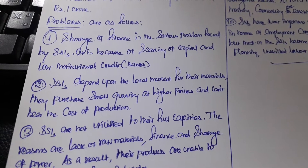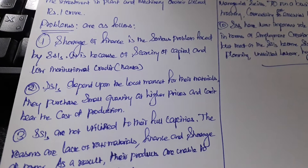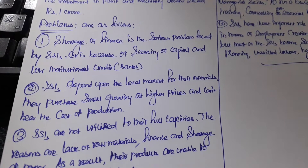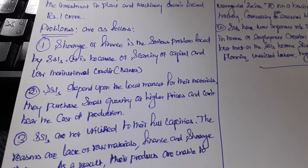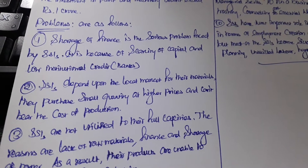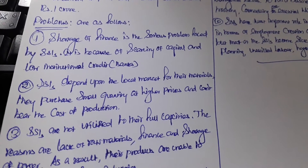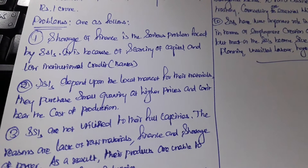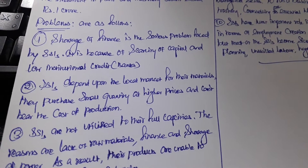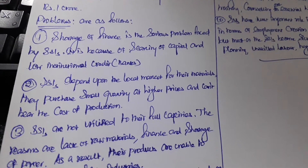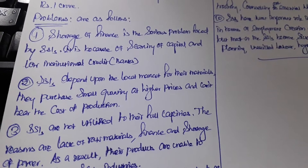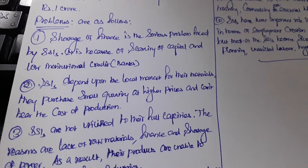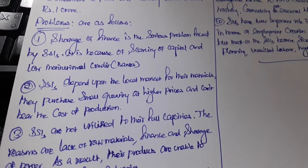The next problem is that SSIs depend upon the local market for the materials they purchase. They buy small quantities at higher prices and cannot bear the cost of production. Most SSIs depend on the local market for purchasing materials, buying small quantities at high prices that they cannot afford.